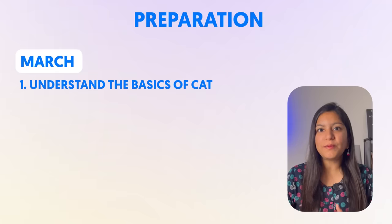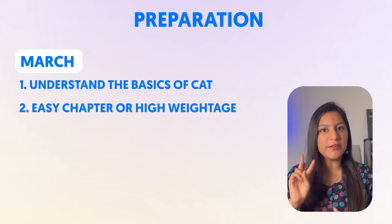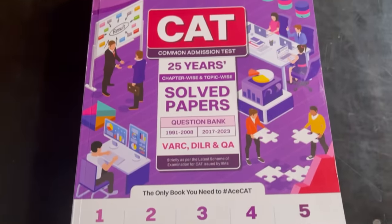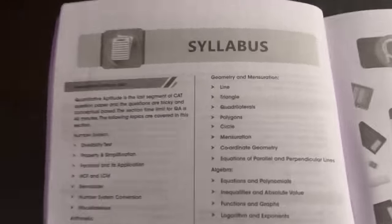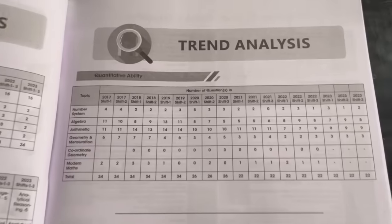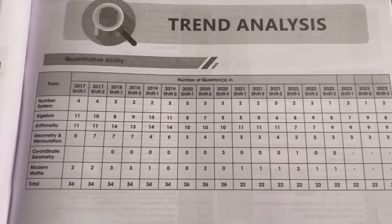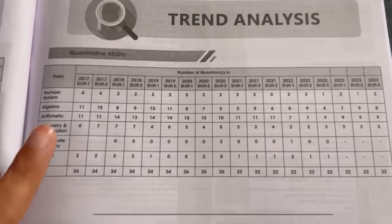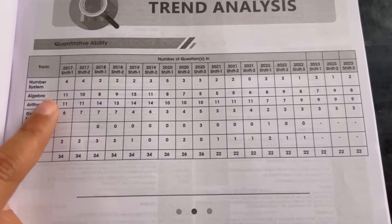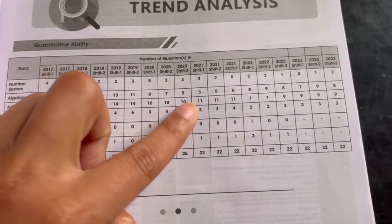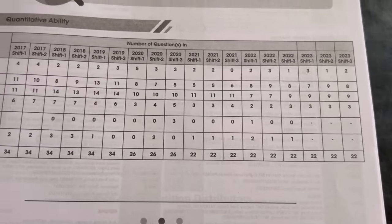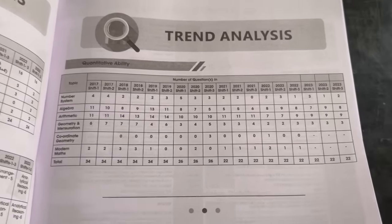The next step is to pick those chapters which are either easy or which are more weighted. Like Oswal book's last 25 years of past year papers, which have the syllabus given along with a trend analysis — meaning which topic under CAT's papers has had questions asked. From that, you will find that algebra and arithmetic are two topics which carry a lot of weightage.